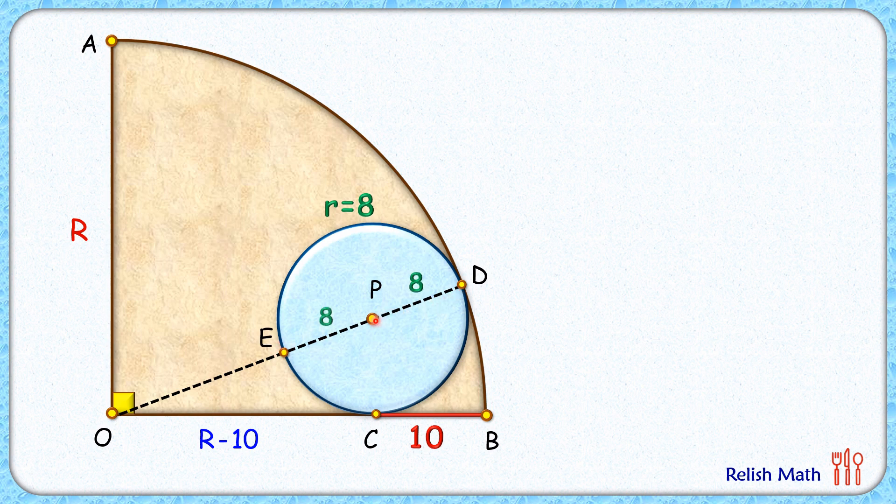EP is also 8 centimeters. OD length is the radius R, and thus OE length will be R minus 16.